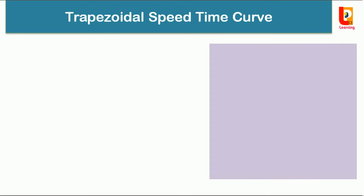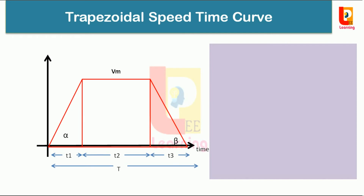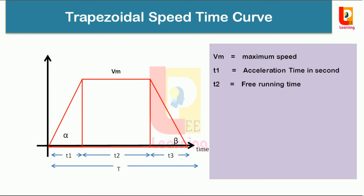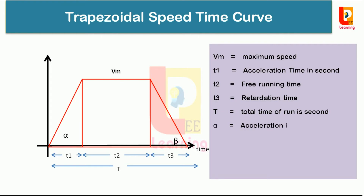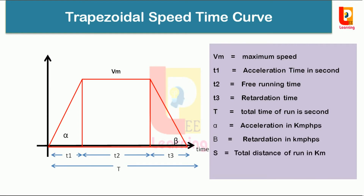Now we move toward the trapezoidal speed time curve calculation. In the trapezoidal speed time curve, Vm is the maximum speed, T1 is the acceleration time in seconds, T2 is the free running time, T3 is the retardation time, and T is the total time of run in seconds. Alpha is the acceleration in km/h per second, beta is the retardation in km/h per second, and S is the total distance of run in kilometres.